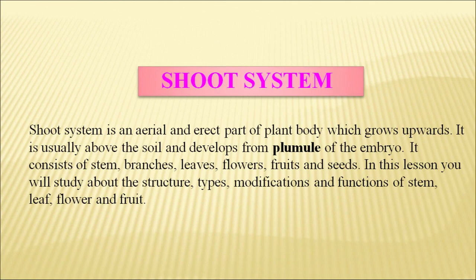Every seed has an embryo in it and the plant develops from the embryo. The plumule part of the embryo develops into the shoot system, and the radicle part of the embryo develops into the root system.